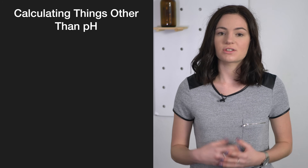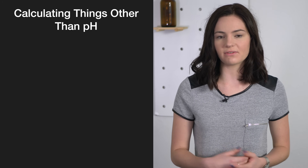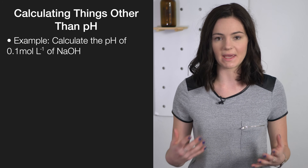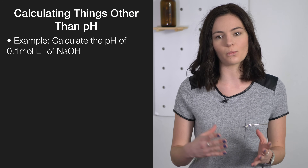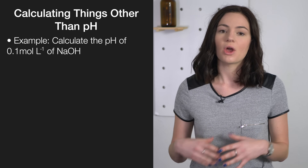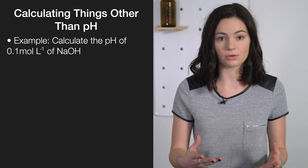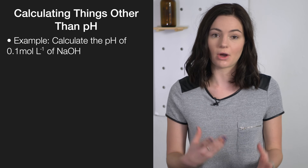Most students are comfortable calculating pH given the concentration of H3O+ ions. However, when students are given concentrations of OH- ions, they'll get a little bit thrown off. There are two methods for us to combat that. So for example, if we were given a question asking us to calculate the pH of 0.1 moles per litre of NaOH, we could use pOH.